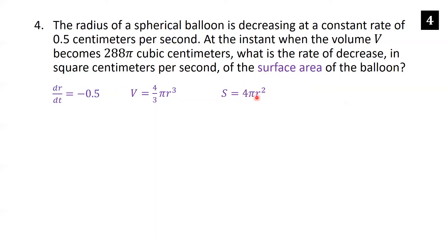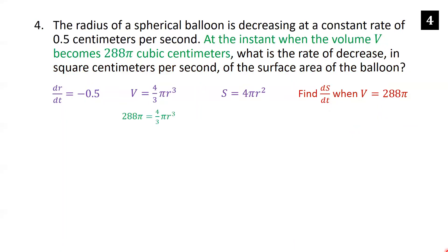If you forget the surface area formula, you can get it by taking the derivative of the volume formula. We want to find ds/dt when V equals 288 pi. First, find the radius at that moment: plug 288 pi into V equals 4/3 pi r cubed. Multiplying each side by 3/4 and dividing out the pi's gives 216 equals r cubed. Taking the cube root gives r equals 6.